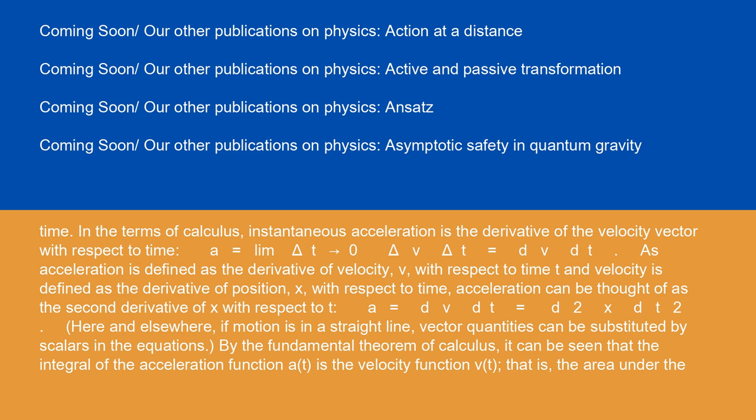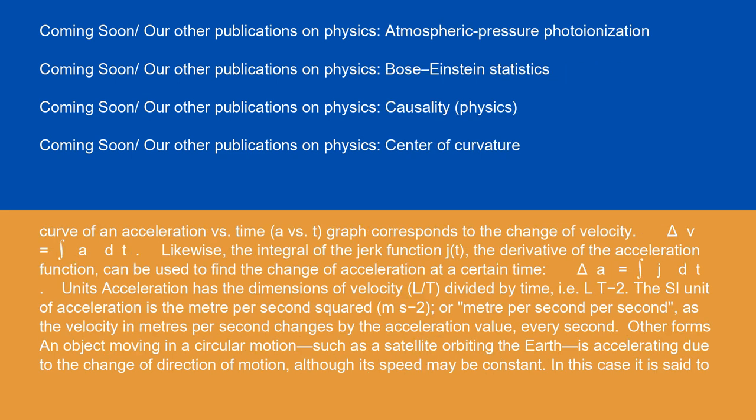Here and elsewhere, if motion is in a straight line, vector quantities can be substituted by scalars in the equations. By the fundamental theorem of calculus, it can be seen that the integral of the acceleration function a(t) is the velocity function v(t) — that is, the area under the curve of an acceleration versus time (a vs. t) graph corresponds to the change of velocity: Δv = ∫a dt. Likewise, the integral of the jerk function j(t), the derivative of the acceleration function, can be used to find the change of acceleration at a certain time: Δa = ∫j dt.